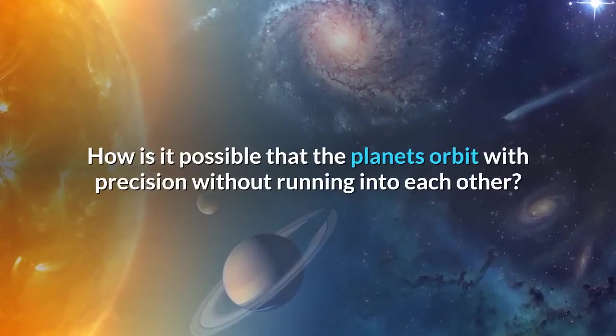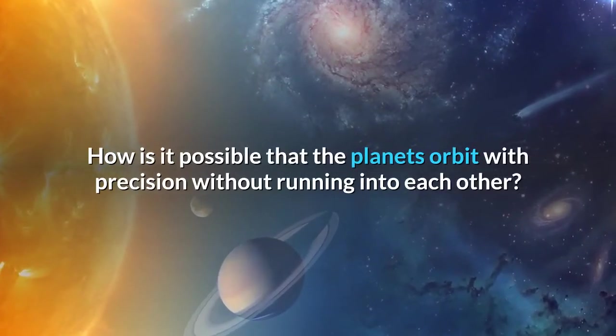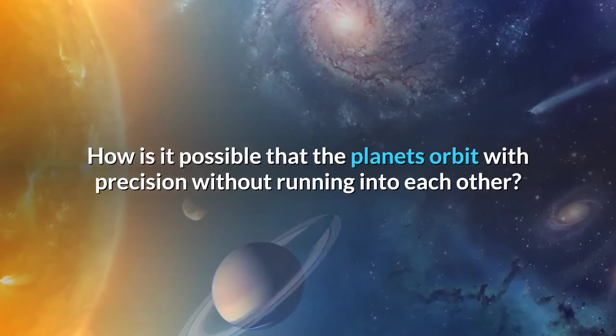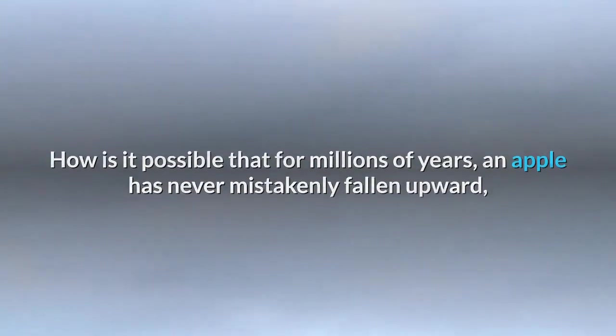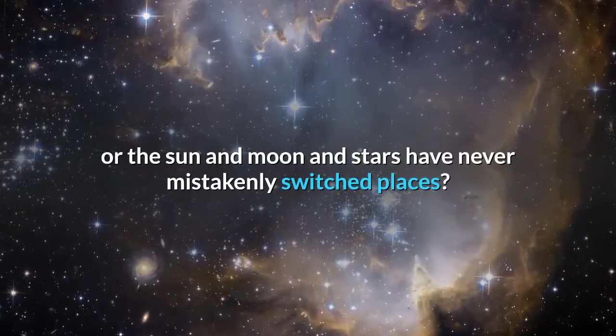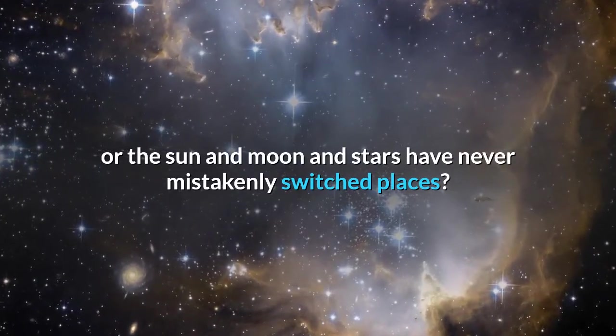How is it possible that the planets orbit with precision without running into each other? How is it possible that for millions of years, an apple has never mistakenly fallen upward? Or the sun and moon and stars have never mistakenly switched places?